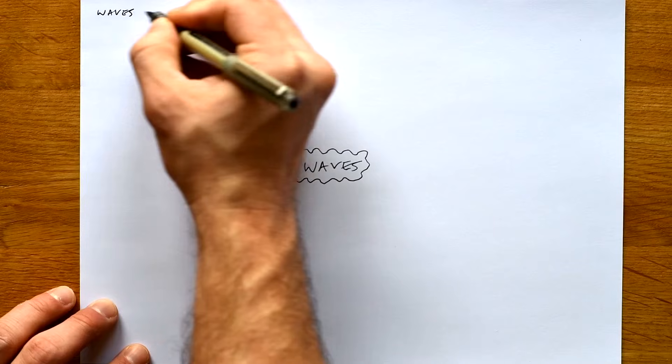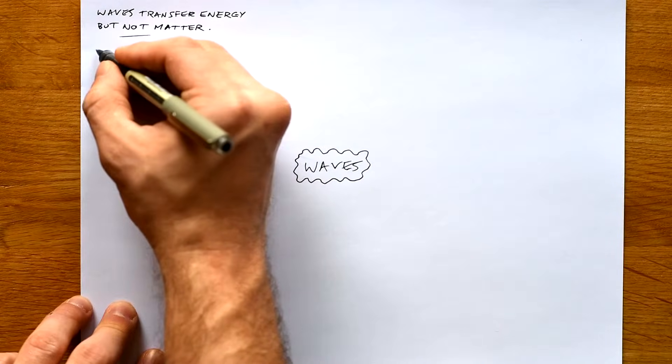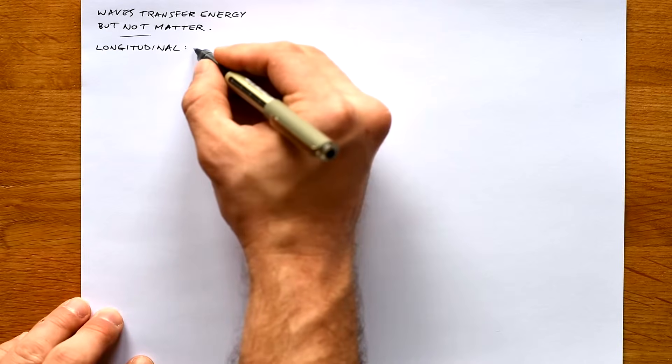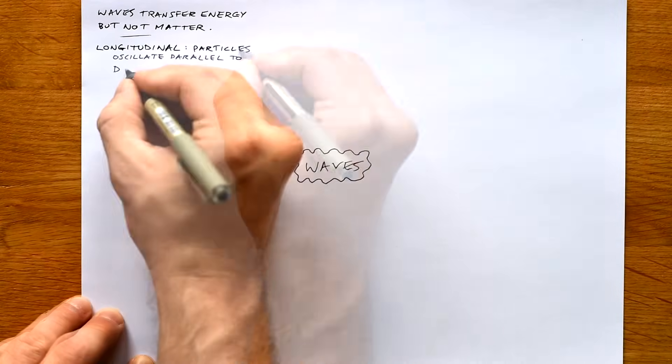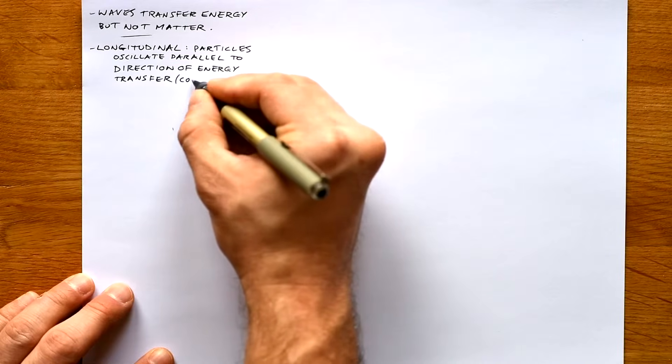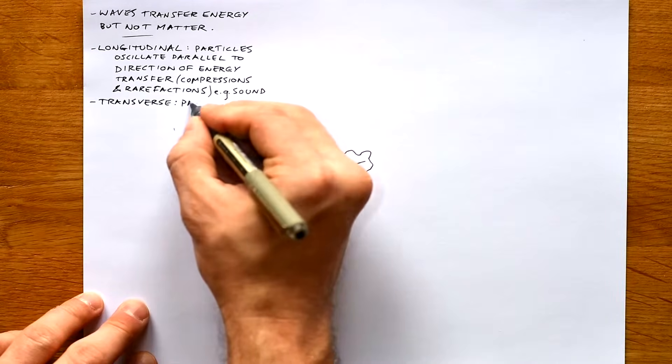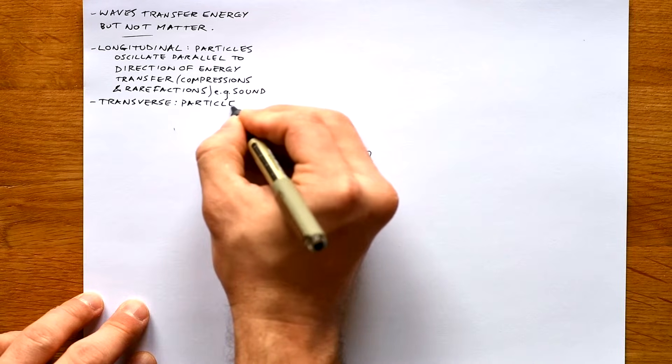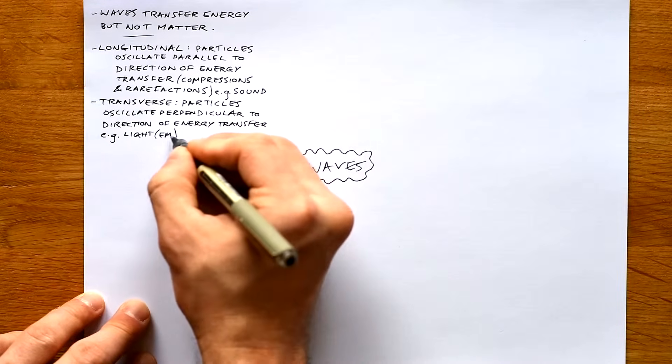There are two types: transverse and longitudinal. Longitudinal is when the particles involved in the wave are oscillating parallel to the direction of energy transfer, and they're made up of compressions and rarefactions, for example sound waves. Transverse is the opposite - particles oscillate perpendicular, for example light or any EM, electromagnetic waves, waves on a string, waves in water, and so on.